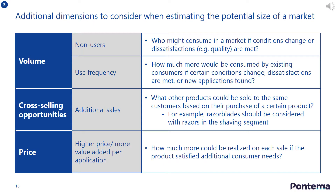When market sizing, you can also consider some additional sensitivity dimensions in your analysis. For instance, can new customers be found if certain market conditions change, such as via a change in pricing, or the introduction of a new channel to market, or can the frequency of use of the product be increased? Cross-selling is another way of generating additional sales, as can introducing more value into the product. All of these factors can serve to increase the size of the potential market.